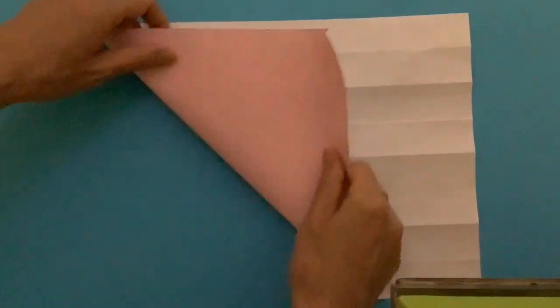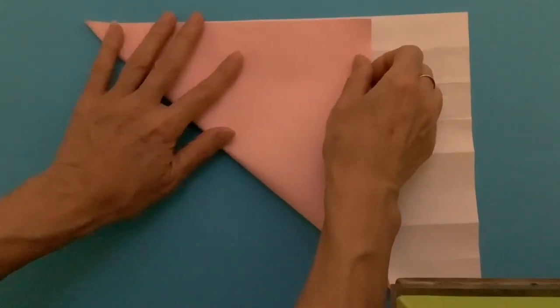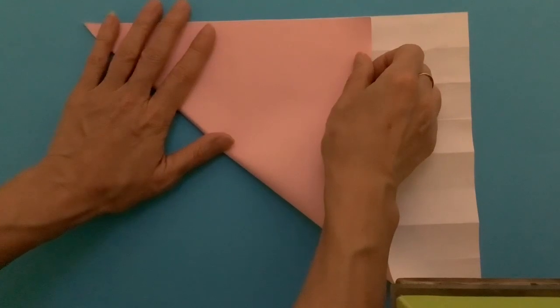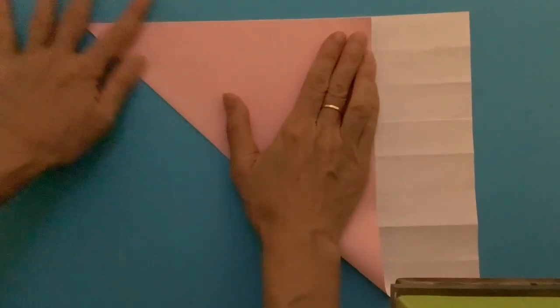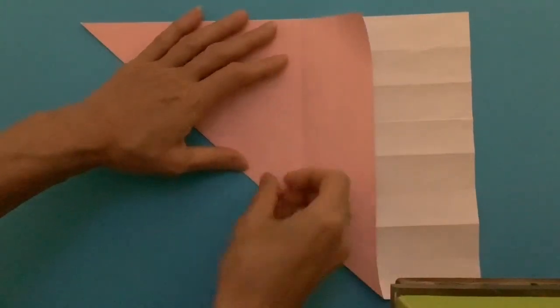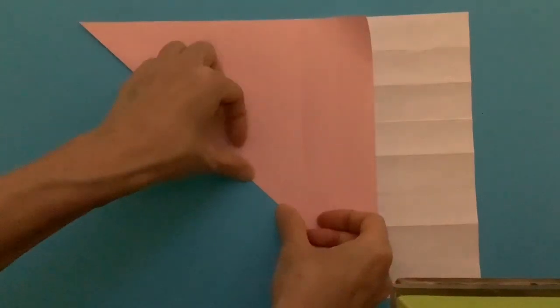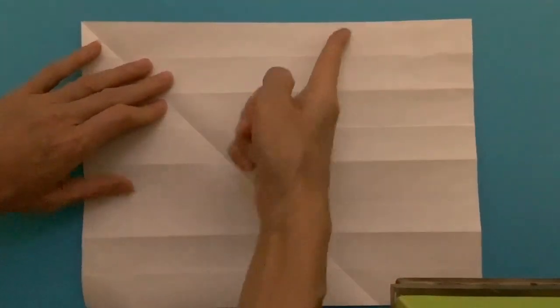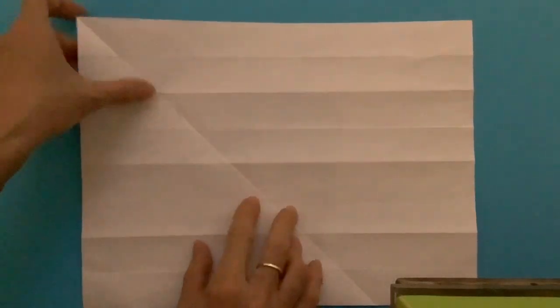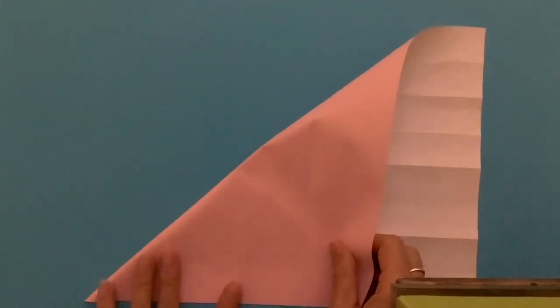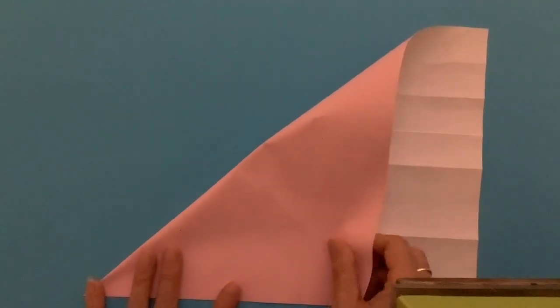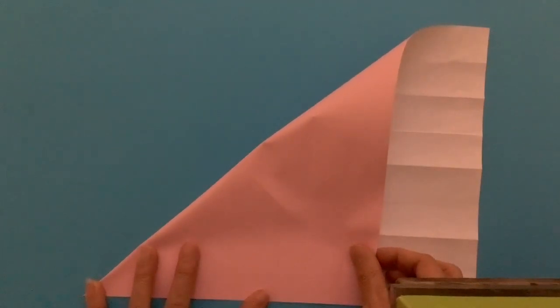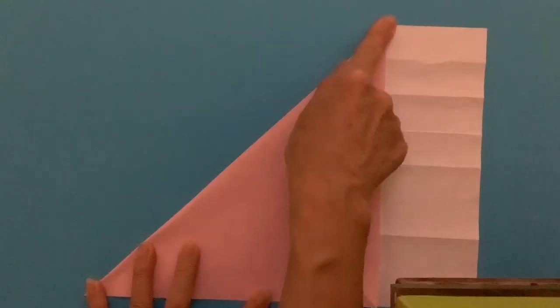Fold. This time triangle, diagonally. Fold opposite way. As a result, you will see an X crease.